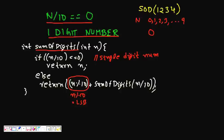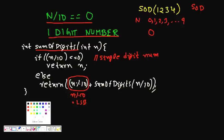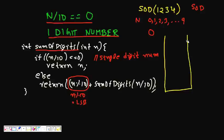Here is the recursive code: function sumOfDigits(n) — if n / 10 equals 0, it's a single-digit number, so return n. Otherwise, return n % 10 (the LSB digit) plus sumOfDigits(n / 10), where n / 10 is the integer quotient. Now let's trace how this works using a stack. We'll represent sumOfDigits as 'sod'. Let n = 1234.